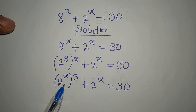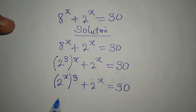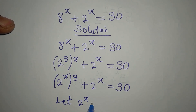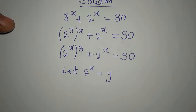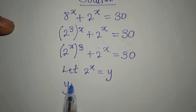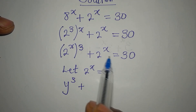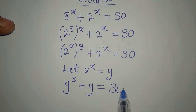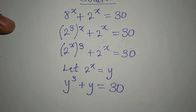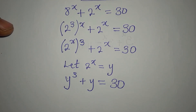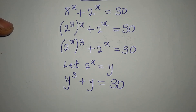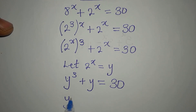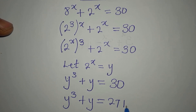Now we have 2 to the power of x in two places, so we let 2 to the power of x equal y. This means we now have y to the power of 3 plus y equals 30. We then express 30 in a matching form: 30 can be written as 27 plus 3.